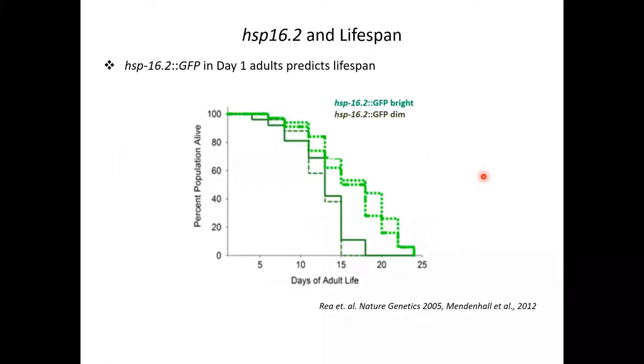In another study, Tom Johnson's lab showed that they could predict C. elegans lifespan, this time by looking at a single and even earlier time point. In this case, the expression of GFP driven by the promoter of HSP 16.2, a heat shock response gene, could predict lifespan as early as in the first day of adulthood. What they saw was that worms that were expressing more GFP upon heat shock at day 1, here in bright green, they live longer than worms that were expressing less GFP.